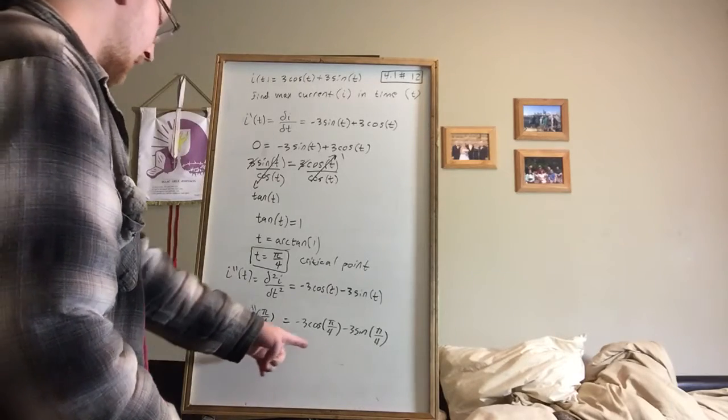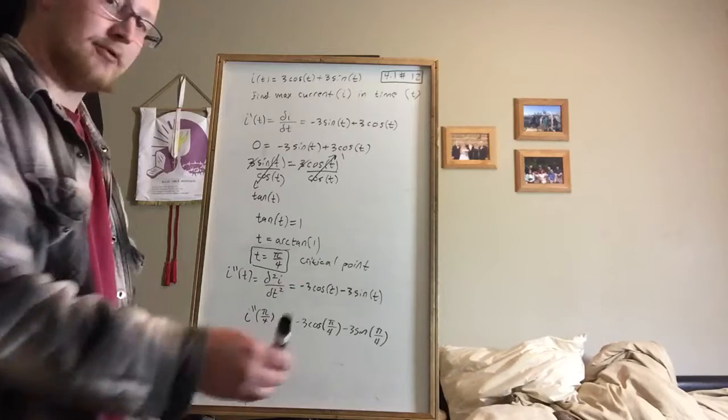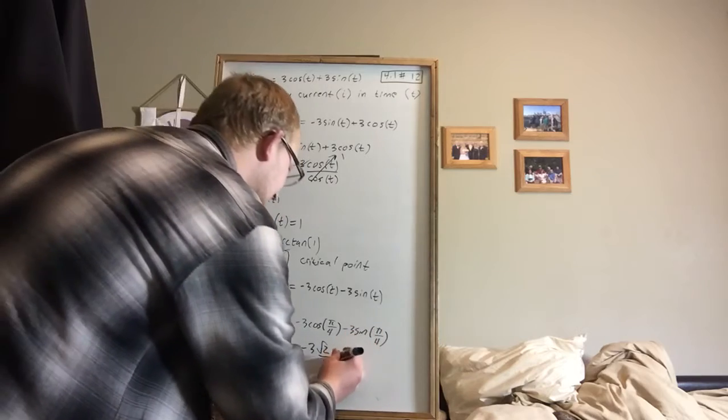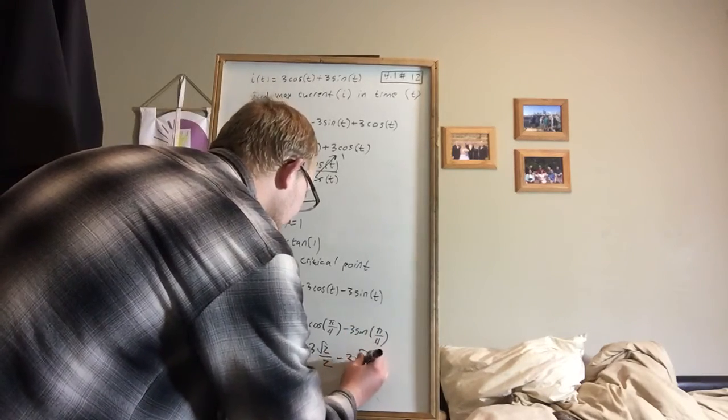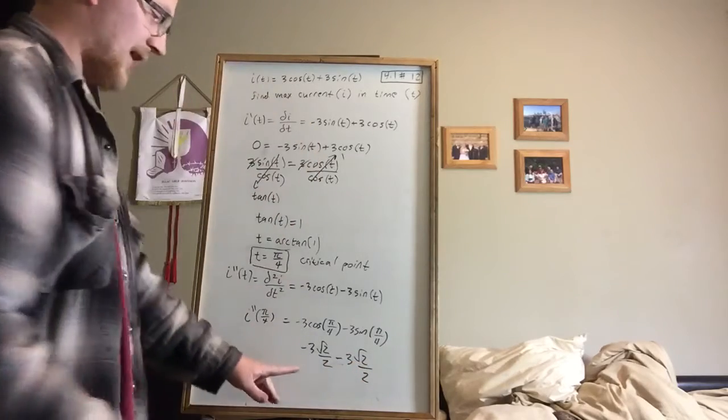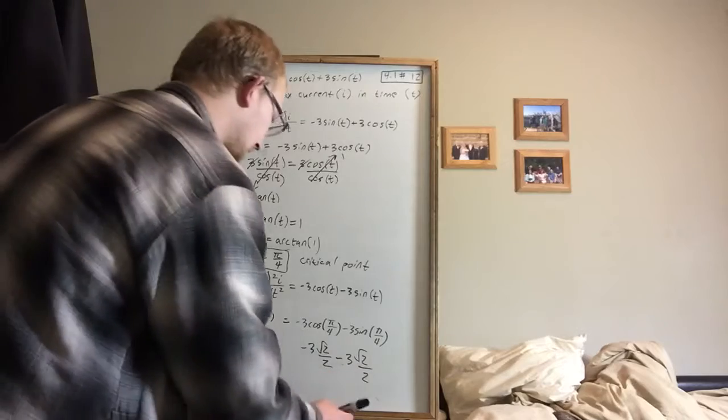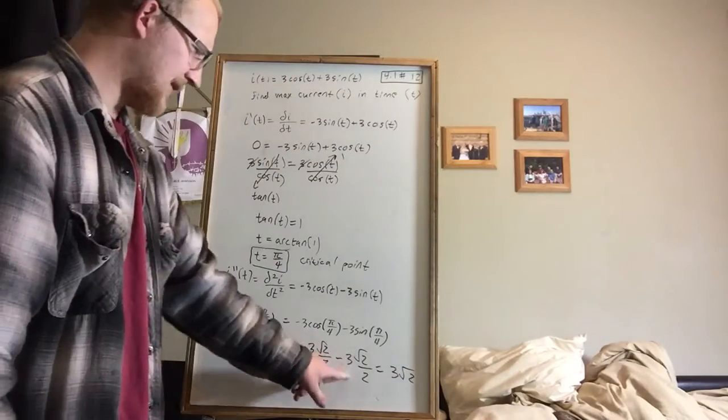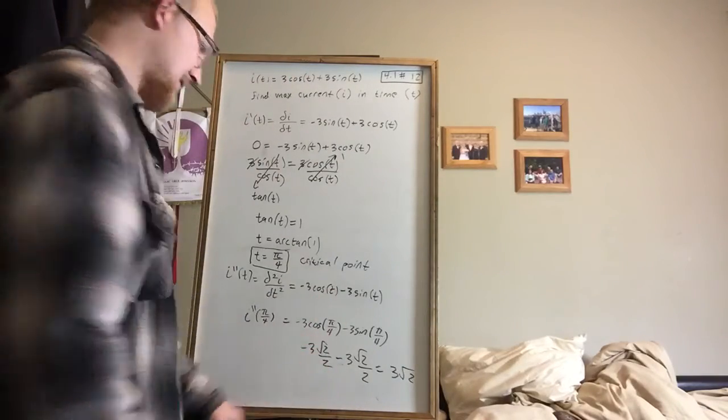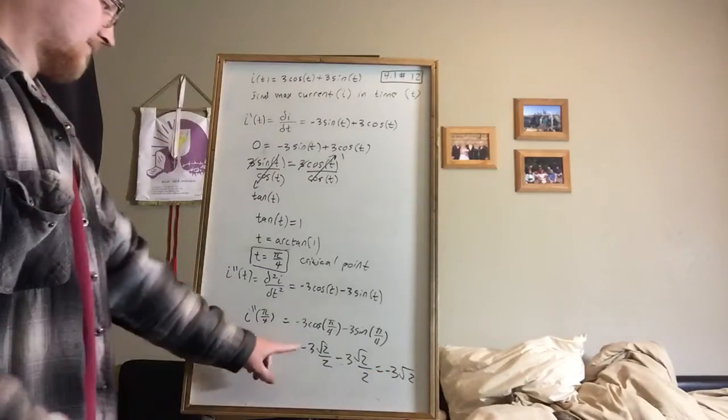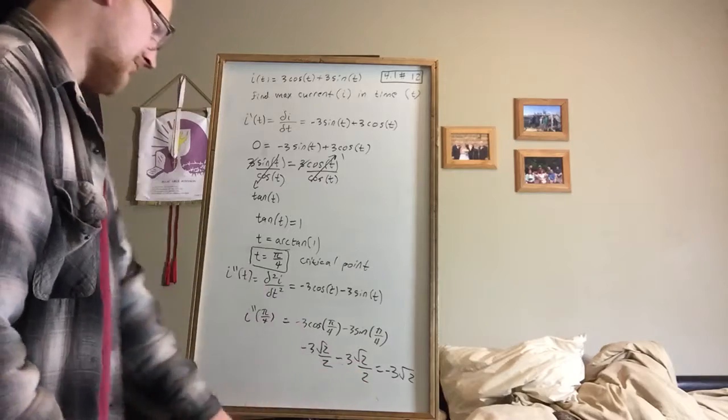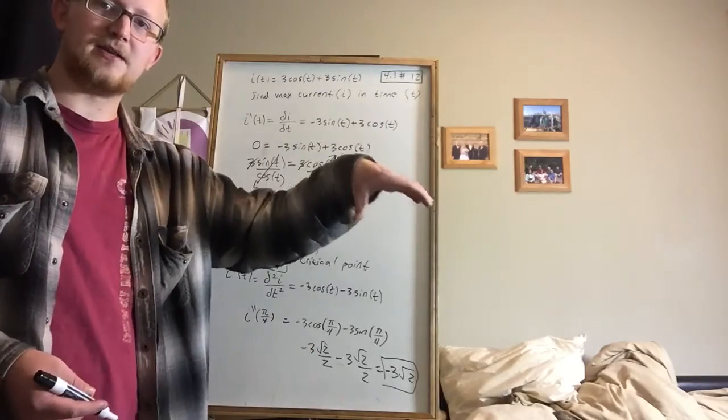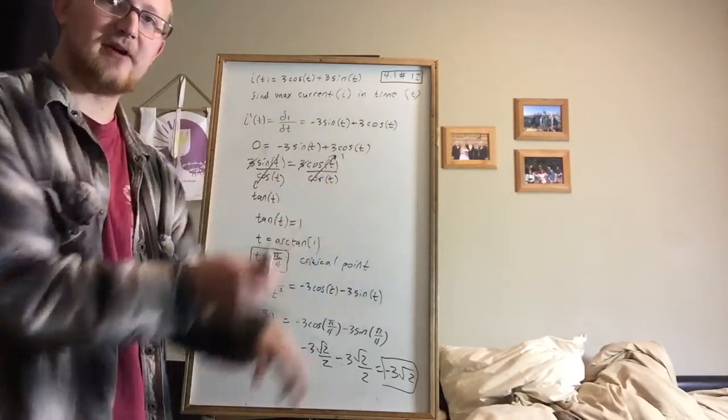And so cosine of pi fourths happens to be root 2 over 2. So we're looking at negative 3 root 2 over 2. And then sine of pi fourths also happens to be root 2 over 2. So we've got 3 times root 2 over 2. We have two negative numbers. When we combine them, we get a negative number. It happens to be 3 root 2. Because minus 3 minus 3 is minus 6 over 2 is minus 3. So this is minus 6 divided by 2 is minus 3 root 2. And so this is what happens when we plug in our critical value. And remember, negative means concave down. So the point we're looking at is concave down, which means that we did find a maximum point.